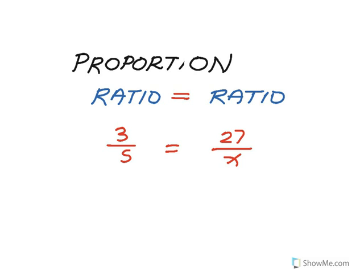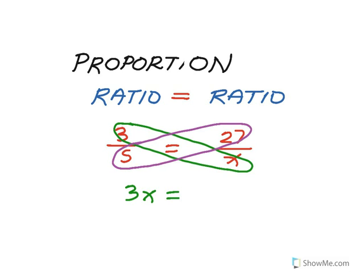I could solve this proportion. You know from working with proportions that we can cross multiply to solve them. So if I cross multiply, it means that the product of 3 and x is going to be equal to the product of 5 and 27, so that would be 135. And this would let me solve for x. Dividing by 3, I have x is equal to 45.